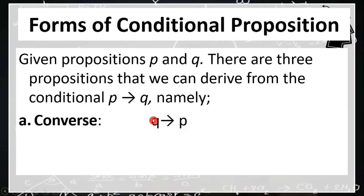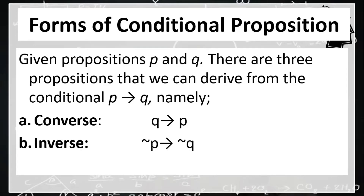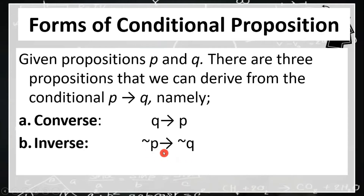On the other hand, the conclusion of the conditional statement becomes the hypothesis of the converse. Next is the inverse. The inverse statement is created by negating both the hypothesis and conclusion of the original conditional statement. Thus, the inverse is the implication not P implies not Q.